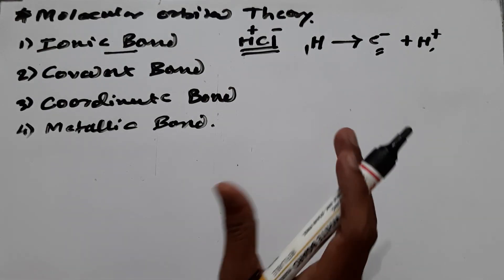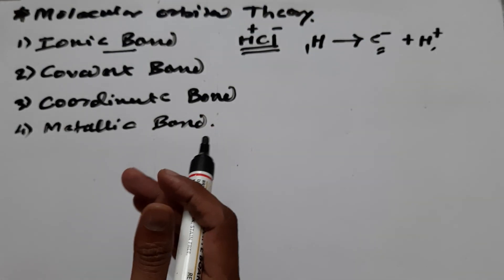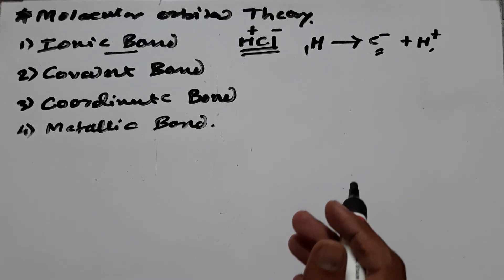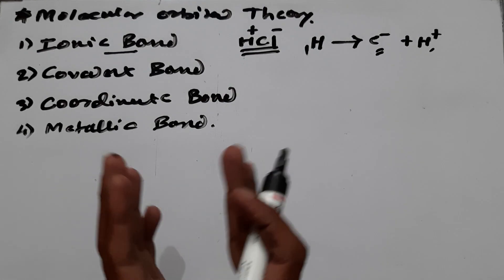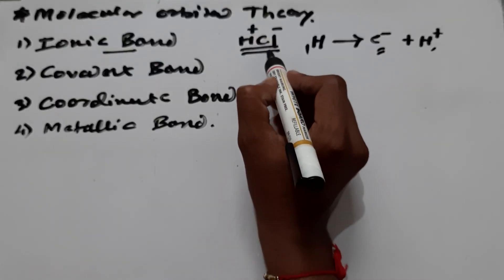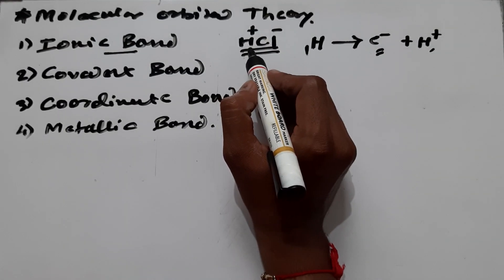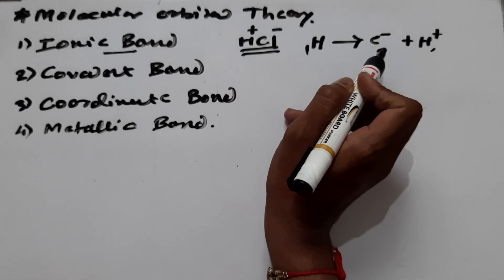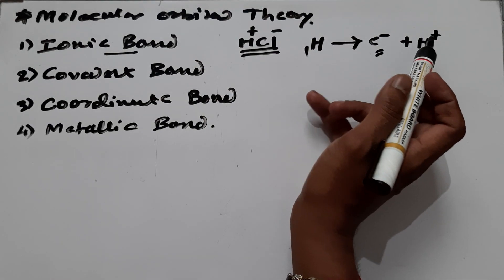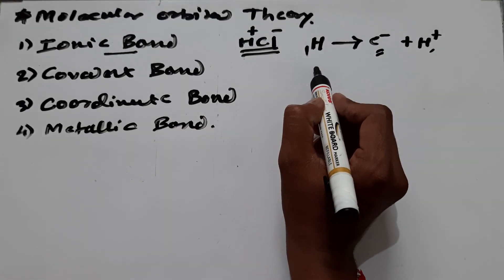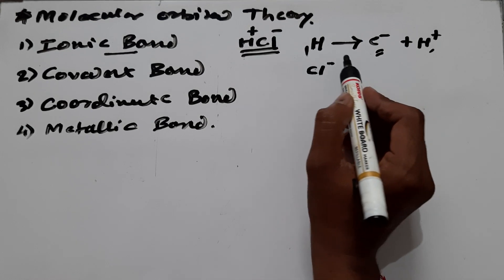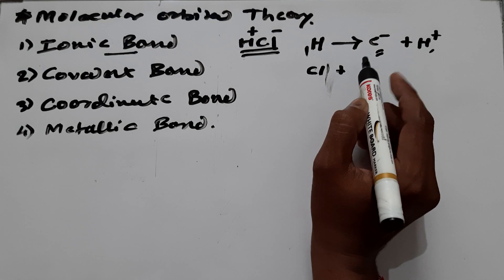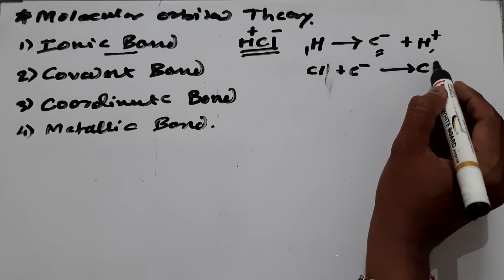We have two main types of elements in the periodic table: electropositive and electronegative, with a third moderate type in between. Here, Cl is more electronegative and hydrogen is less electronegative — hydrogen is electropositive. So hydrogen will lose one electron and be converted into H positive. Cl, being more electronegative, will gain this electron and be converted into Cl negative.